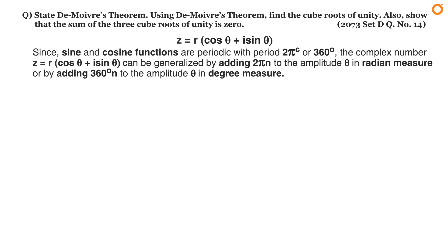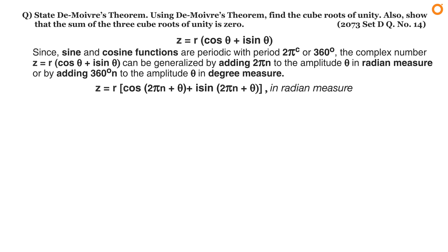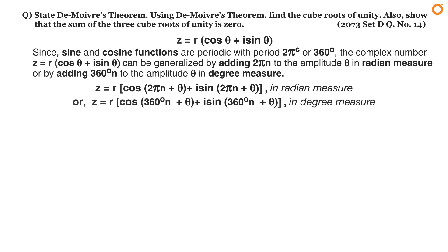Since the sine and cosine functions are periodic with period 2π radians or 360 degrees, the complex number z equals r times (cos theta plus i sin theta) can be generalized by adding 2πn to the amplitude theta in radian measure, or by adding 360n to the amplitude theta in degree measure, where n is any integer.